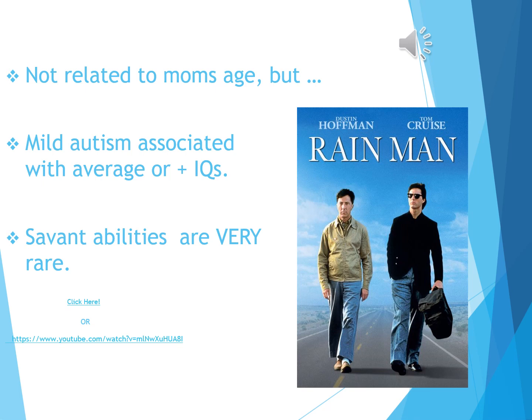Unlike Down syndrome, autism does not appear to be related to the mother's age, but some research suggests it is associated with advanced paternal age. Individuals with mild autism often have average or above-average IQs, while individuals with severe autism are more likely to be profoundly or severely intellectually disabled.